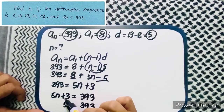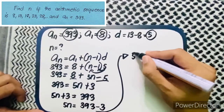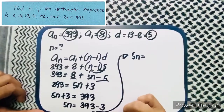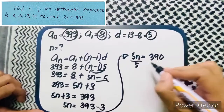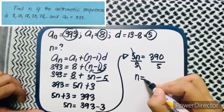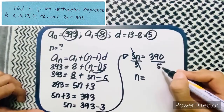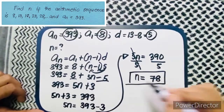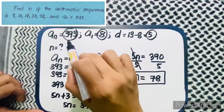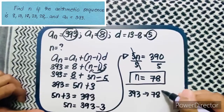Transfer the plus 3 to the other side so it becomes minus 3. So 5n equals 393 minus 3, which is 390. Divide both sides by 5: n equals 390 divided by 5, which is 78. So our n is equal to 78, meaning 393 is the 78th term.